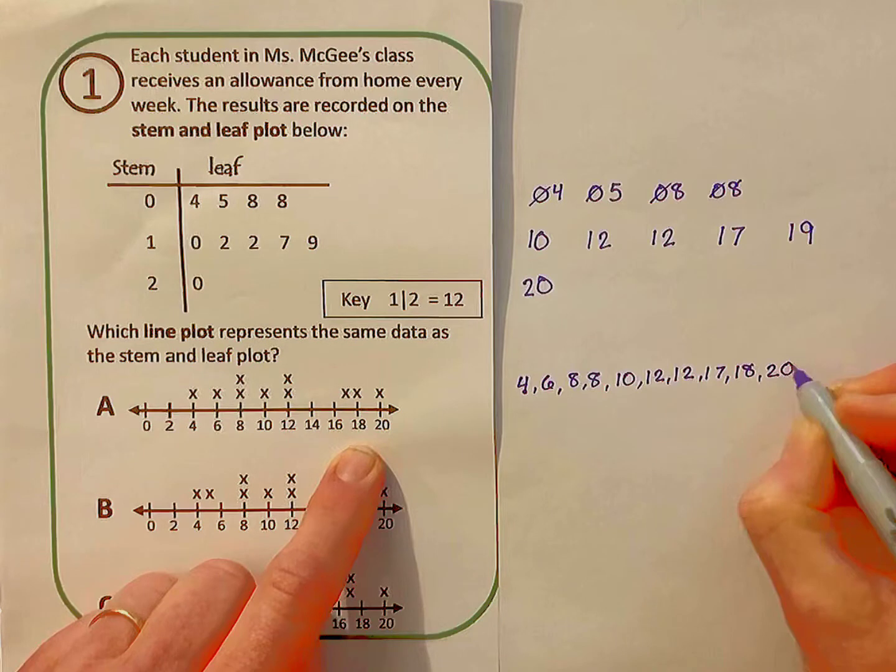Let me compare these to those from the stem and leaf plot. The numbers are similar. I have a 4, I have two 8s, but they're not exactly the same. I don't have a 5 in the line plot. So I'm going to go on to B.